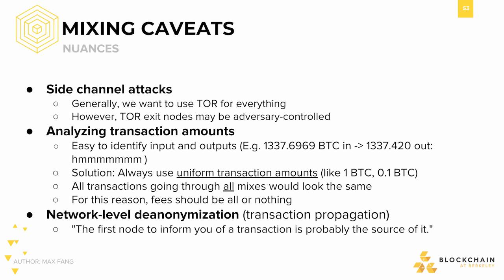Finally, there are a few additional caveats to consider in the context of mixing protocols. First, there are side-channel attacks. For this reason, we'd want to use Tor for everything. Tor is a protocol developed by the US government to anonymize your internet activity by restricting the knowledge of traffic to first-hop routers. Assuming that the Tor exit nodes you're using aren't adversarially controlled, this will allow you to securely send messages to peers without detection.